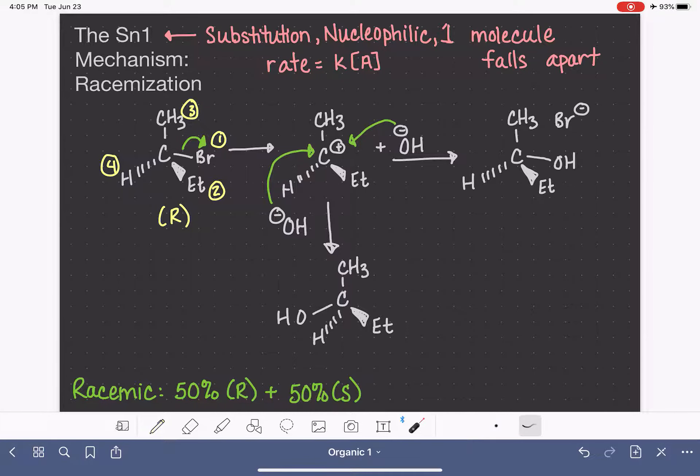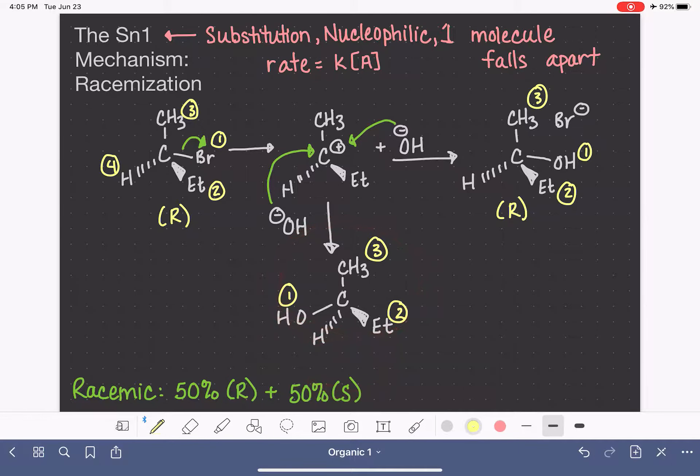And this product over here has 1 to 2 to 3. This is also R stereochemistry. And then our last molecule, 1 to 2 to 3, here is our S stereochemistry. So in summary, for SN1, if we are starting with a chiral carbon, we are going to get 50% of our product with R stereochemistry and 50% of our product with S stereochemistry.